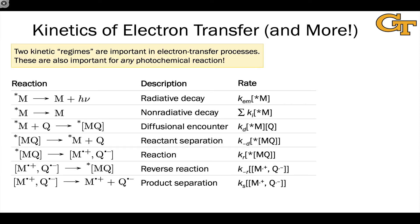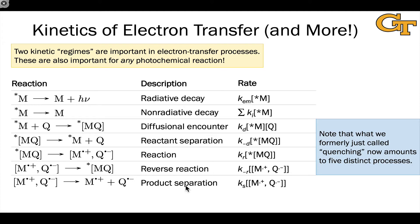This slide lists a kinetic or mechanistic model for photo-induced electron transfer processes. As complex as it looks, this is nothing more than the Stern-Volmer mechanistic model developed previously, with the quenching step broken up into five distinct steps, restricting ourselves to an electron transfer process possibly involving an exaplex or a diffusional encounter complex.